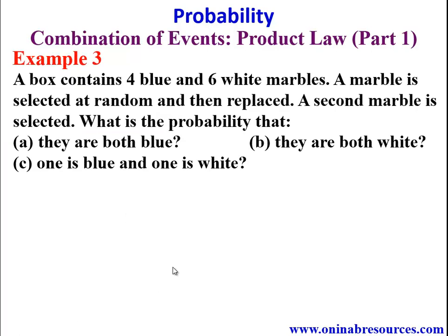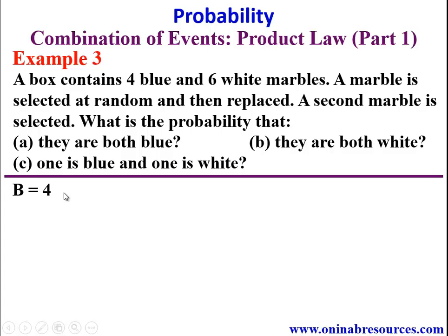Example 3: A box contains 4 blue and 6 white marbles. A marble is selected at random and then replaced; a second marble is selected. Find the probability that (a) they are both blue, (b) both white, (c) one is blue and one is white. There are 4 blue, 6 white, total 10 marbles. Since the first marble is replaced before picking the second, this is an independent event.